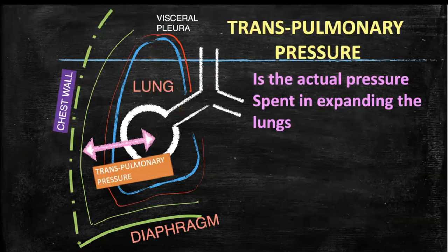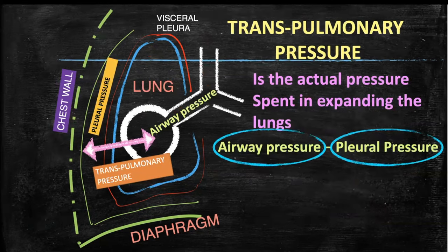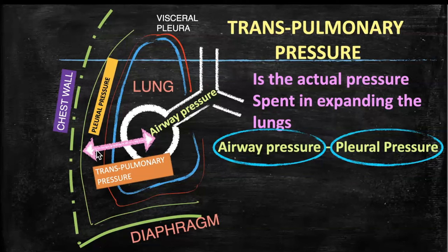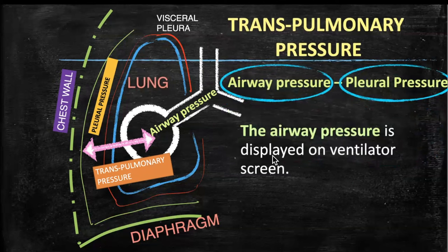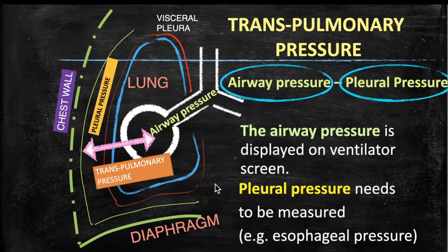The trans-pulmonary pressure is the pressure across the alveolo-capillary membrane and is the actual pressure used for expanding the lungs. It is a transmural pressure — the difference between the airway pressure inside the alveoli and the pleural pressure between the parietal and visceral pleura. Since we cannot measure pleural pressure directly in living humans, we measure esophageal pressure as a surrogate.